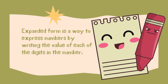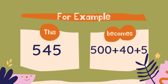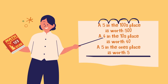Expanded form is just a way of expressing numbers by writing the value of each of the digits in the number. For example, the number 545 in expanded form would become 500 plus 40 plus 5, because the 5 is in the hundreds place so it has a value of 500, the 4 in the tens place is worth 40, and the 5 in the ones place is worth 5. So that's 500 plus 40 plus 5.